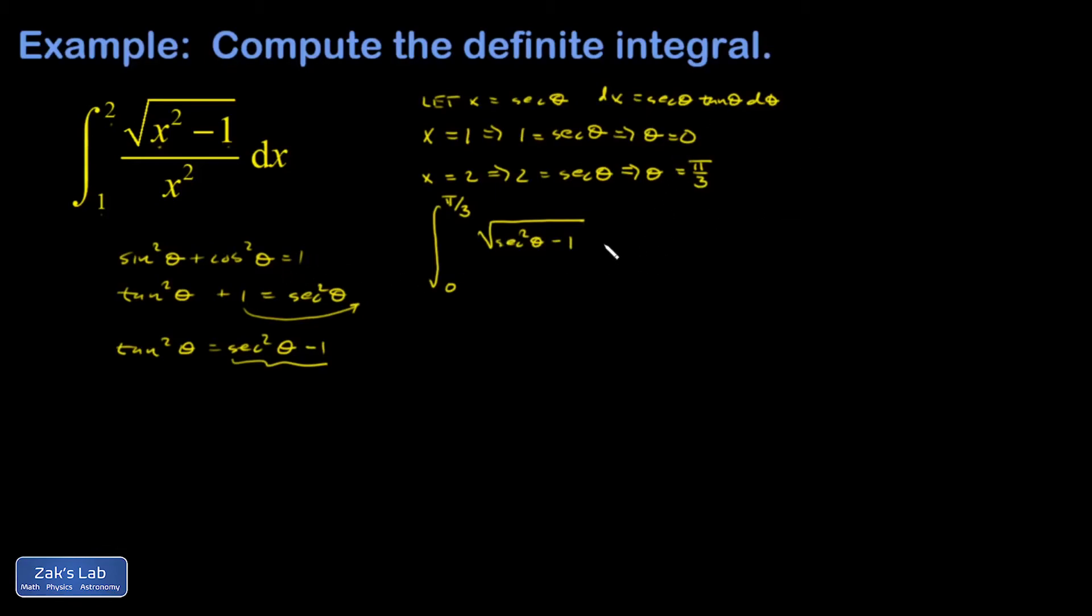And then I have my dx which is secant theta tangent theta d theta. And it's all divided by x squared which is going to be secant squared theta.